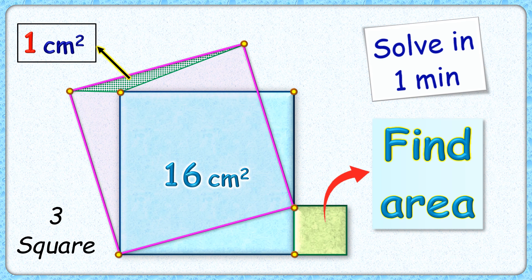Wow, this question looks fun to solve. Here given are three squares with area of this blue square as 16 cm² and area of this green triangle formed here is 1 cm². Exciting part is with this limited information, we have to find area of this green square.